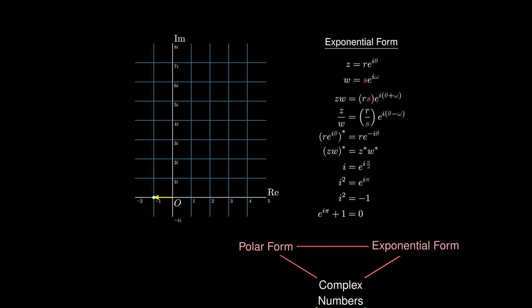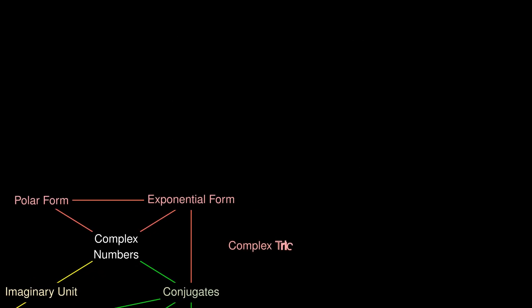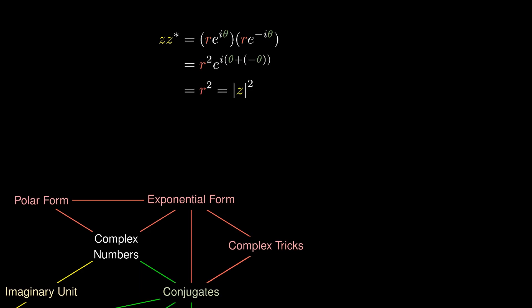Exponential forms introduce us to some really useful tricks when solving problems in complex numbers. For example, if we multiply a complex number by its conjugate and employ exponential forms, we can work out the algebra to simplify to r², which is the modulus of z squared.